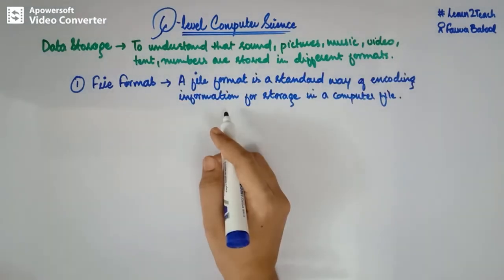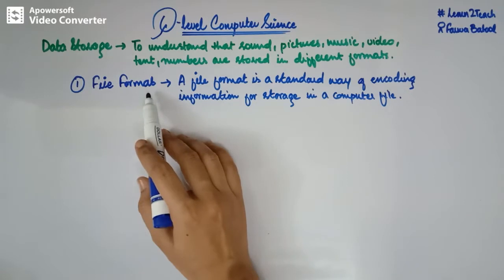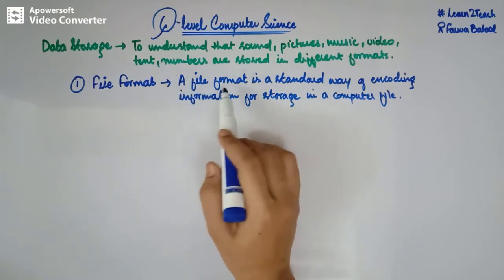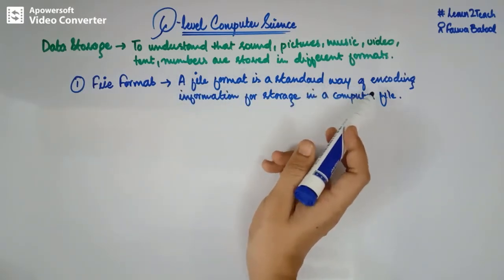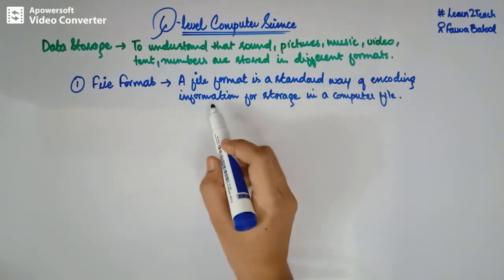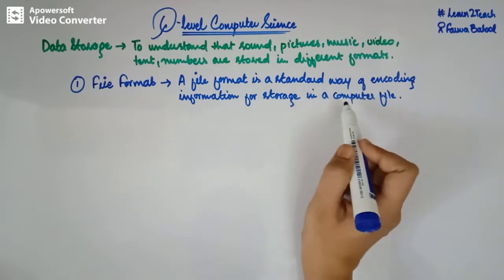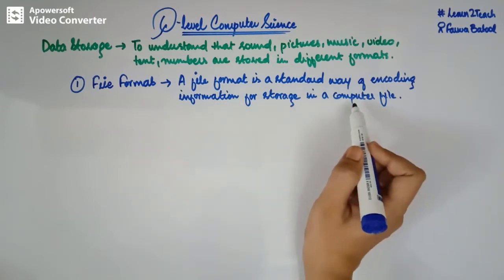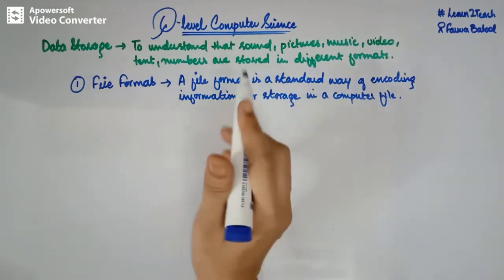Okay, so here we go — this is the definition of file format. A file format is a standard way of encoding information for storage in a computer file. Let me explain this to you.